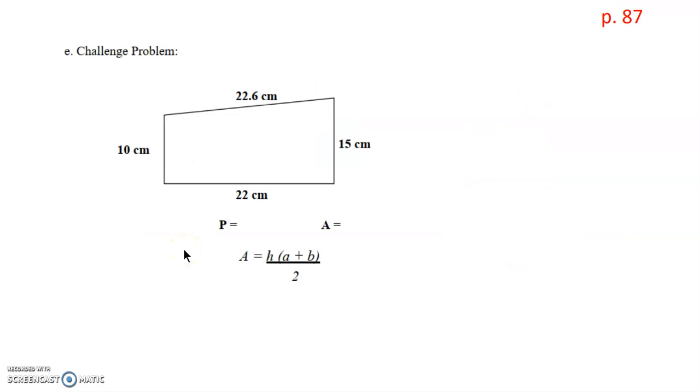Now E is our challenge problem, not because it's more difficult, but because of the orientation of the trapezoid. We so often get comfortable seeing the trapezoid have the bases on the up and down, like this 22.6 and the 22. But in this case, no, these are not the bases. Remember, the bases of a trapezoid have to be parallel lines.